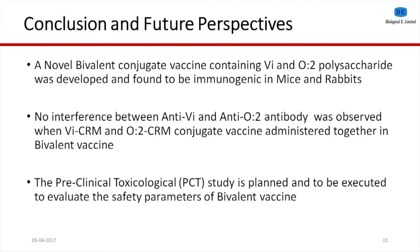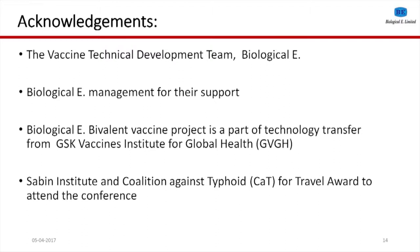In conclusion, we have a novel bivalent conjugate vaccine containing VI and O2 polysaccharide, developed in collaboration with GBGH, which was found to be immunogenic in different animal models. No interference was seen between anti-VI and anti-O2 antibodies when combined in the bivalent formulation. We have done a lot of development work and are now at the very end of development, ready to do preclinical toxicology. After that, the plan is to do a joint clinical program with GBGH. I would like to thank my team at Biological E and GBGH's team, as well as the organizers for the travel award.